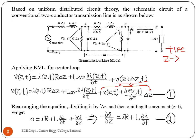Rearranging equation 1 by dividing by delta z and omitting the argument (z, t), we get: 0 equals I·R plus L·∂I/∂t plus ∂V/∂z, which gives us minus ∂V/∂z equals I·R plus L·∂I/∂t. This is equation number 2.